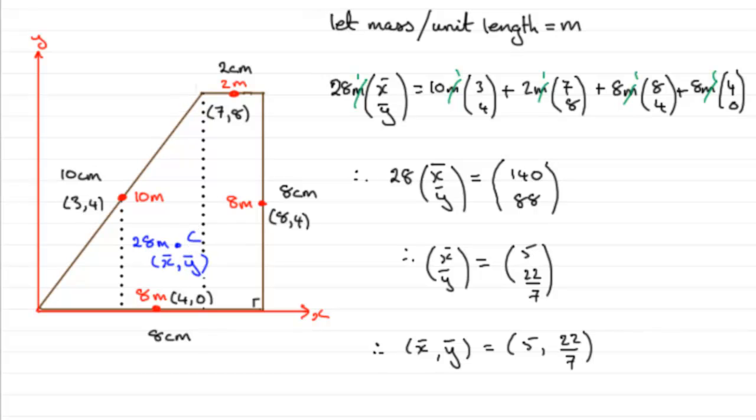Okay, well I hope that's given you some idea then how we go about working out these framework type questions. Just by saying that the mass per unit length is equal to some constant, putting those masses on each of the straight lengths here, and then totaling those masses and doing your moments equation for each of the individual particles about the axis.